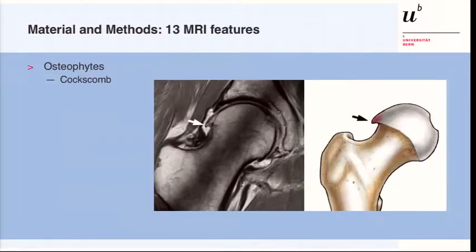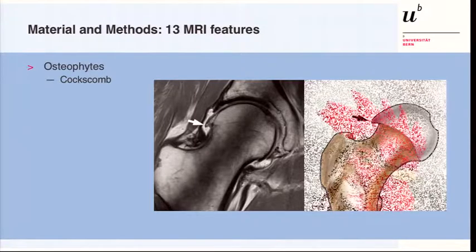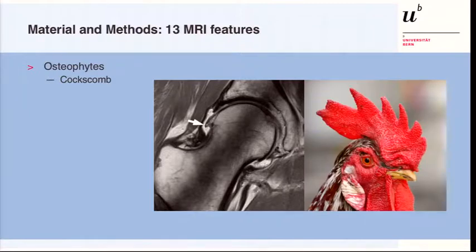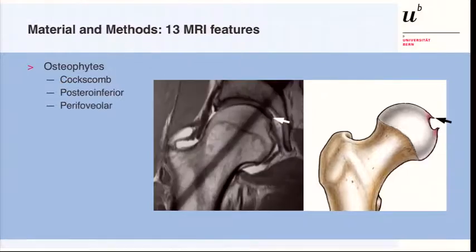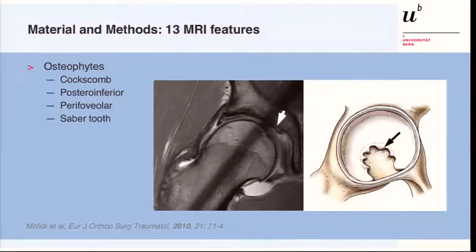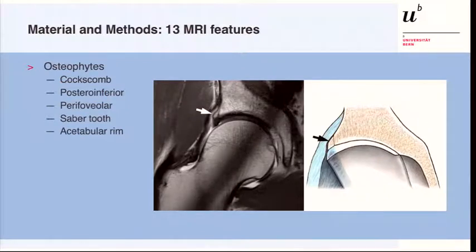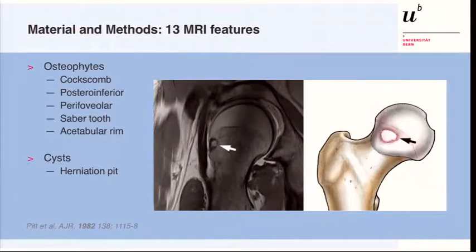Regarding osteophytes, we analyzed the coxcomb osteophyte — an osteophyte at the supralateral portion of the femoral head-neck junction — the posterior inferior osteophyte, which can be very subtle and sometimes not visible on conventional radiographs, the perifoveal osteophyte, the saber-toothed (central) osteophyte, and the acetabular rim osteophyte.